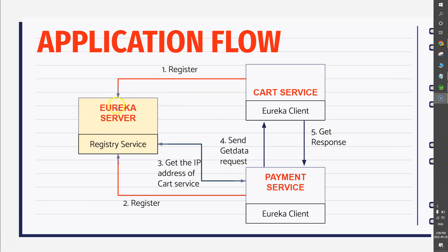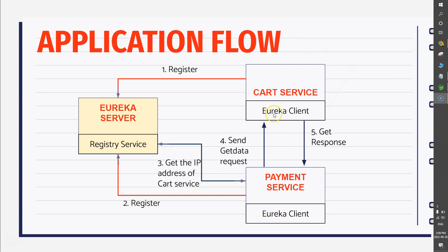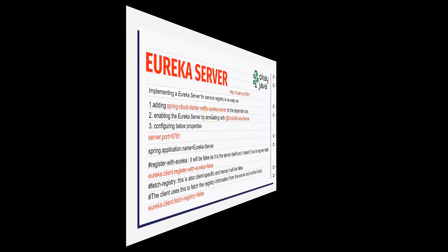We'll have one Eureka Server and two microservices: Cart Service and Payment Service. Once we have these microservices, we want each one to register itself into the service registry. That's why we'll add one dependency called Eureka Client. This dependency will make sure that the particular microservice registers itself into the Eureka Server registry. Then we'll allow communication — Payment Service will talk to the Eureka Server to get the IP address and port number of the Cart Service, and then use those details to send a request to Cart Service and get the response.